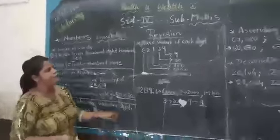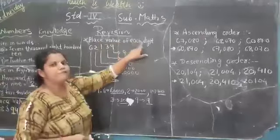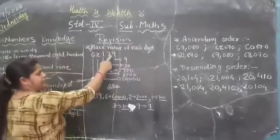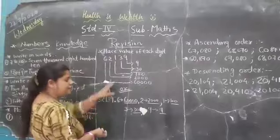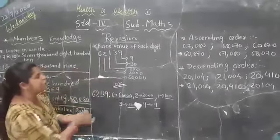Another way of the place value, to find the place value is like this. Find the place value of each digit. So for each digit, you can do like this also and like this also.